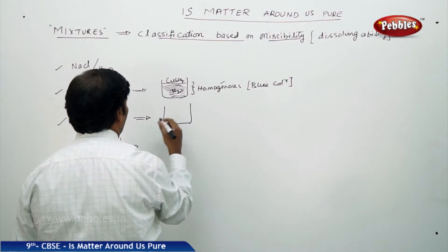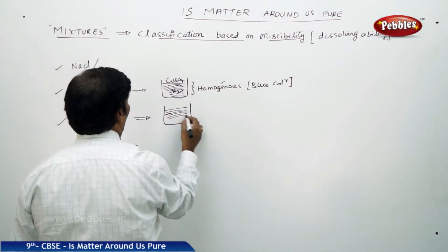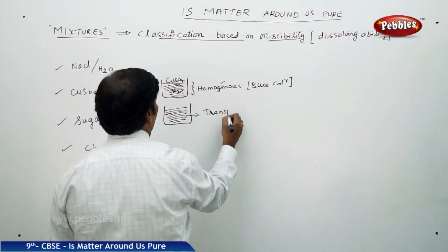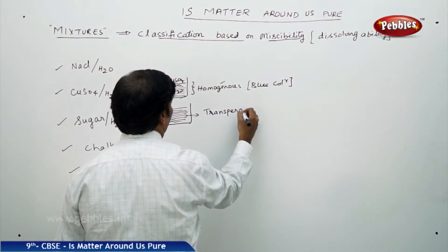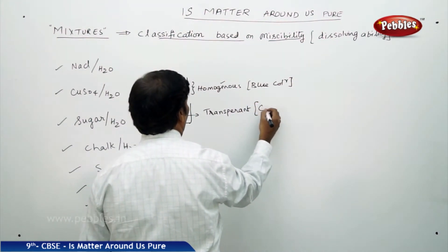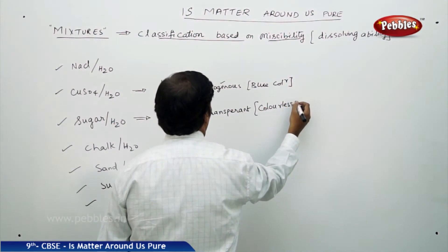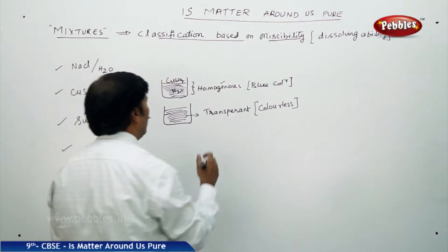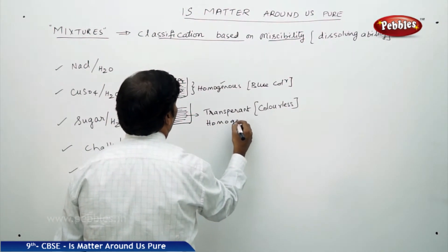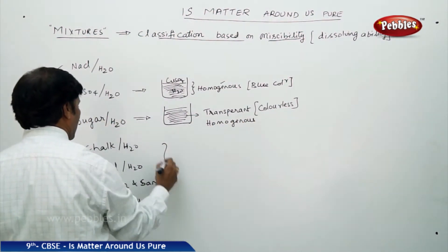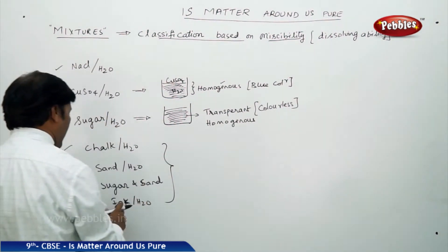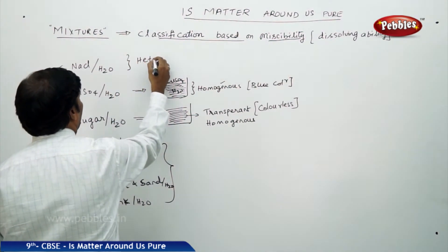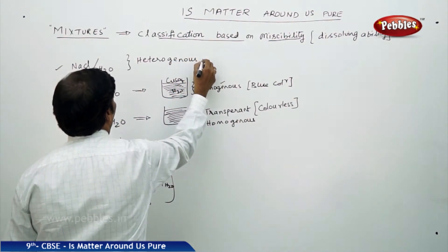Even sugar in water, the solution is going to become quite transparent — colourless solution. All the sugar particles are completely dissolved in water and it becomes homogeneous. But if you take the rest of the cases — chalk in water, sand in water, sugar and sand in water, or ink in water, and also sodium chloride in water — all these are heterogeneous mixtures.